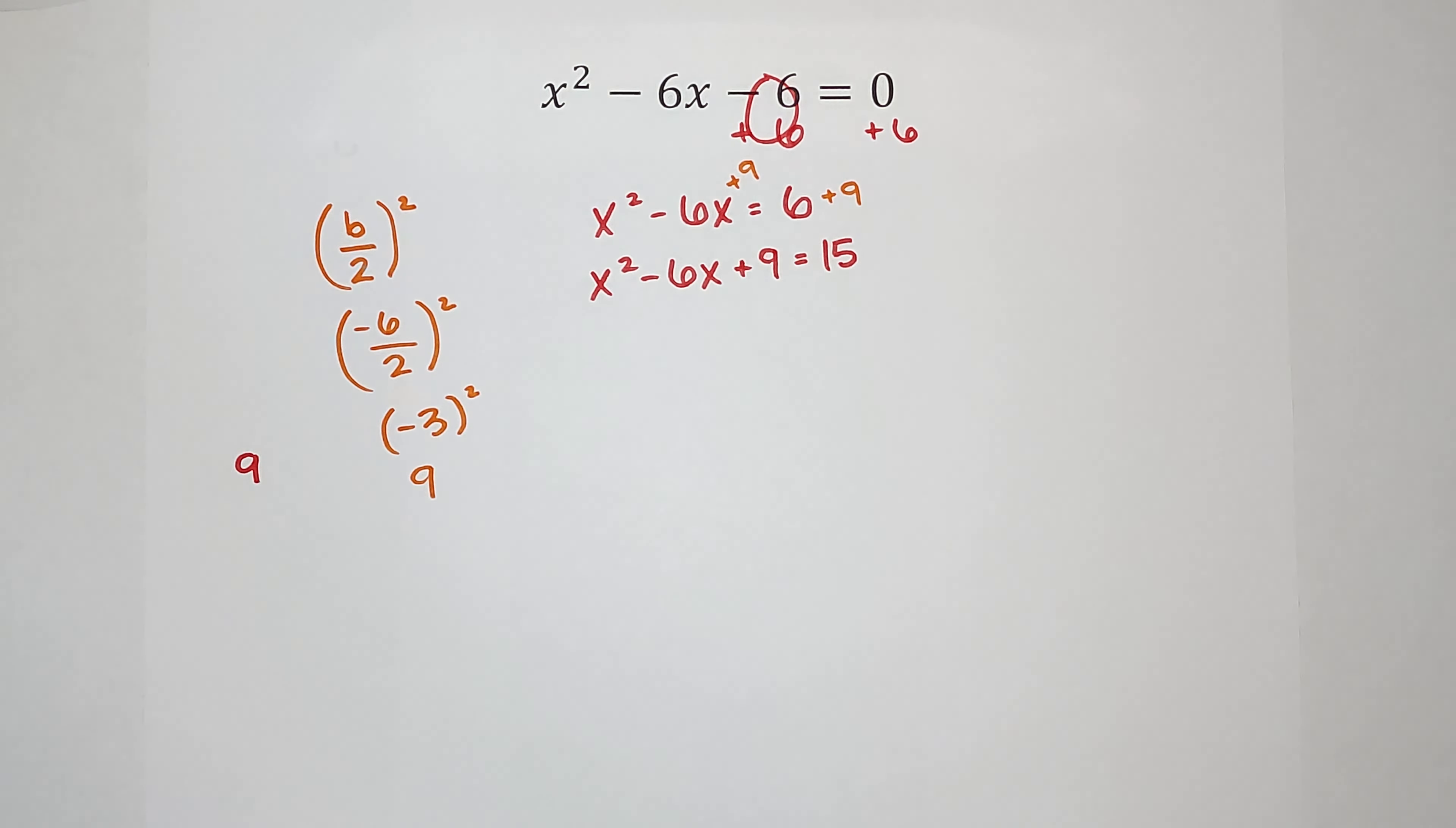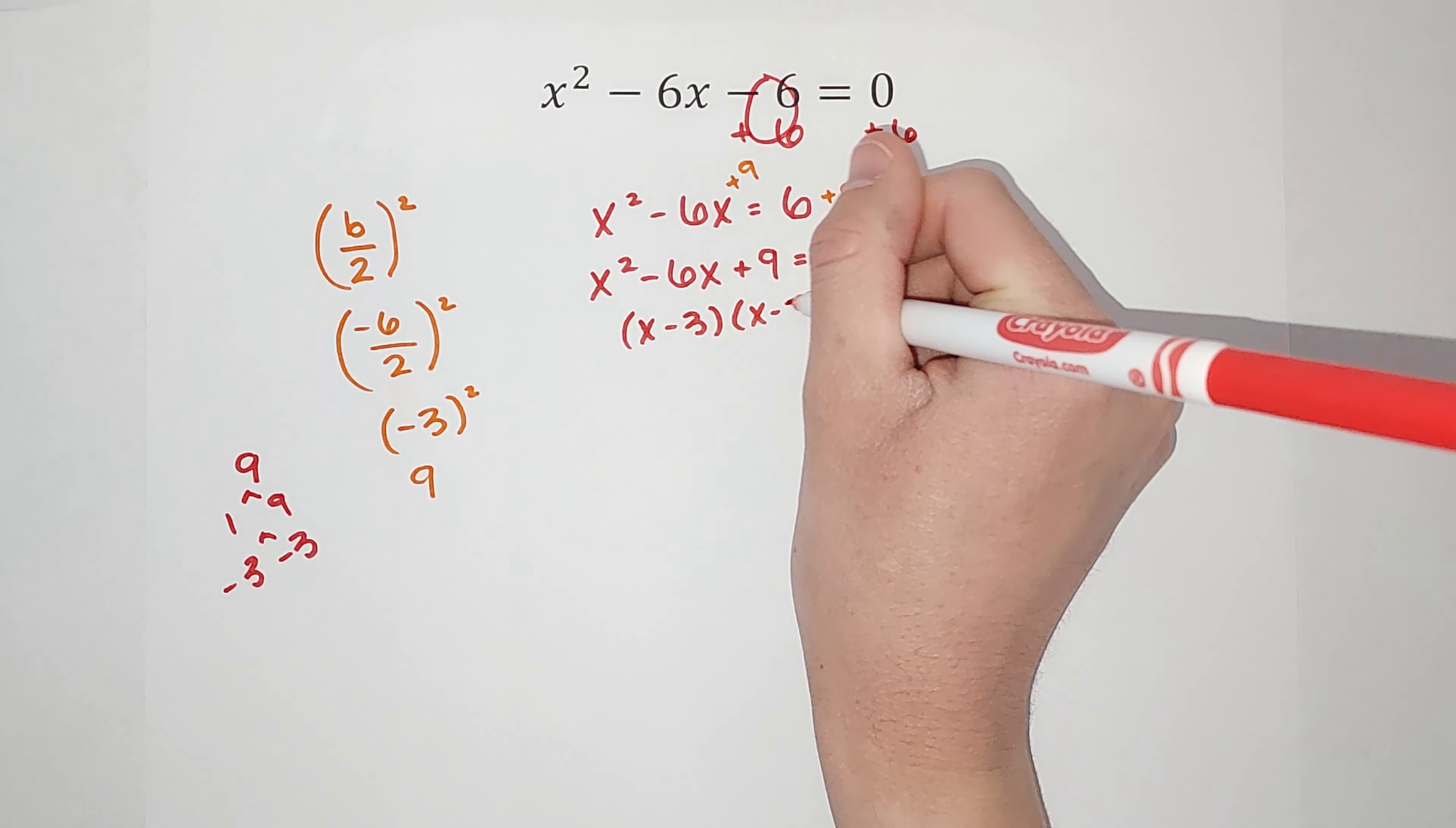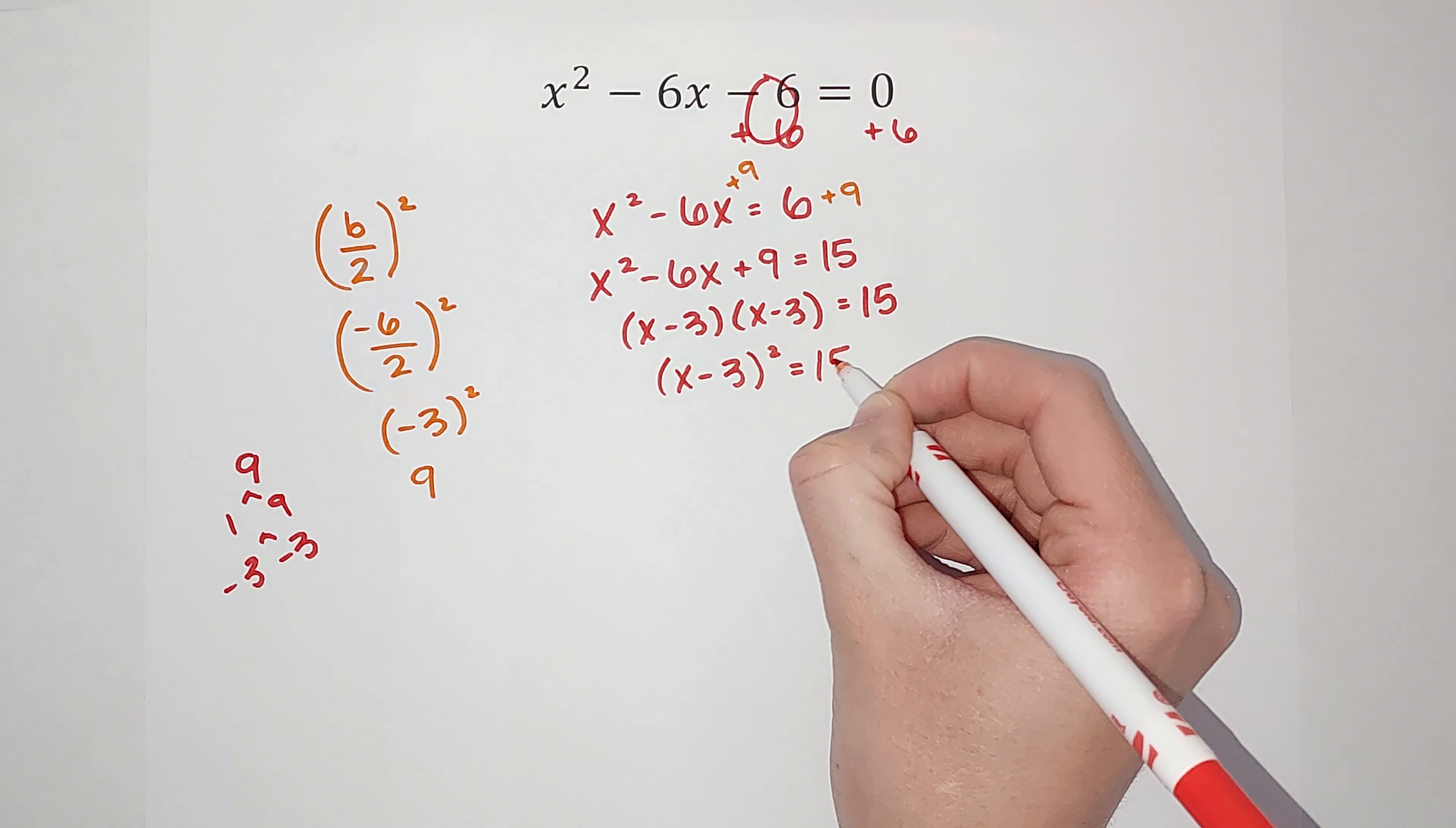Now right now it might look like none of them do, but what if I made both these 3s negative? Negative 3 times negative 3 gives me a positive 9. Negative 3 plus negative 3 gives me negative 6. So if I were to factor this, I get x minus 3 times x minus 3. This still equals 15. Now when I have them the same, I can just write it as x minus 3 squared.